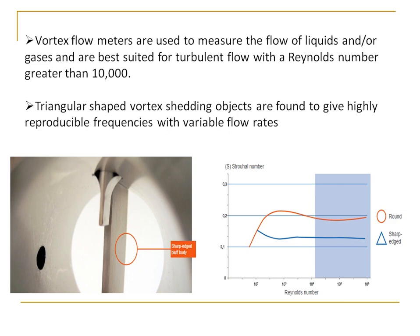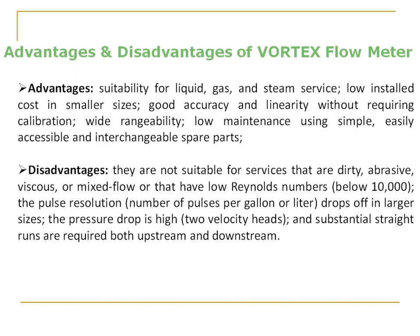Triangular shaped vortex shedding objects are generally preferred because they produce reproducible frequencies across variable flow rates. Looking at the figure of Strouhal number versus Reynolds number, a standard bluff body shows variation with Reynolds number, whereas a sharp-edged triangular shaped vortex bluff body shows the Strouhal number to be very linear with respect to Reynolds number. Therefore, the most commonly used bluff body for vortex flow meters is the triangular shaped bluff body.